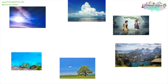The water cycle is much more complicated than you think it's going to be. Heat energy from the sun comes down and warms the surface of the water on the earth, and this causes the water to evaporate. As the water evaporates, it becomes less dense and it rises up, then it condenses when it starts to cool down.